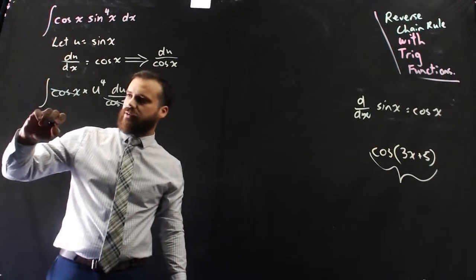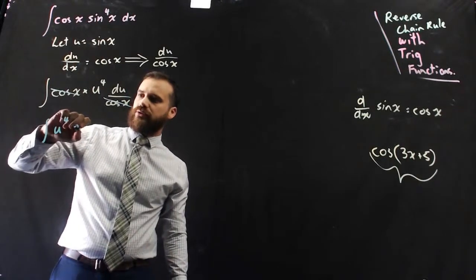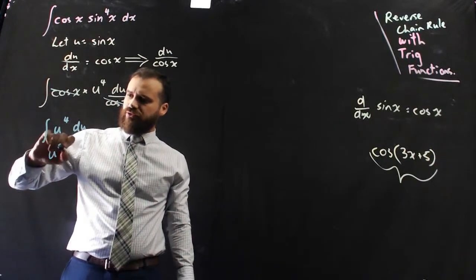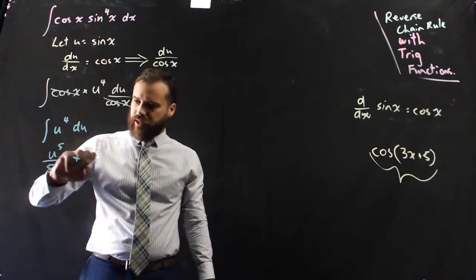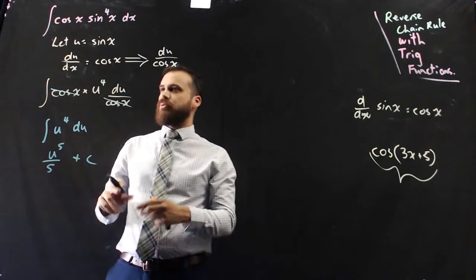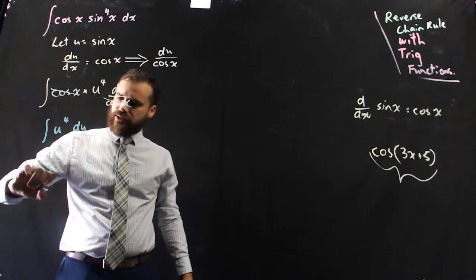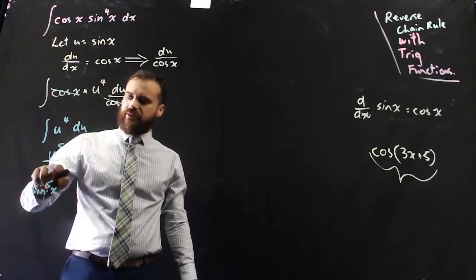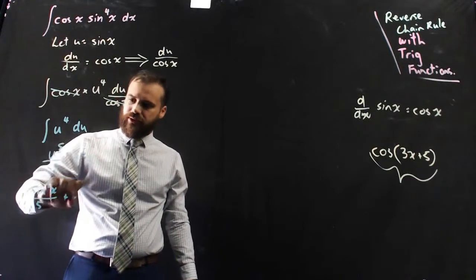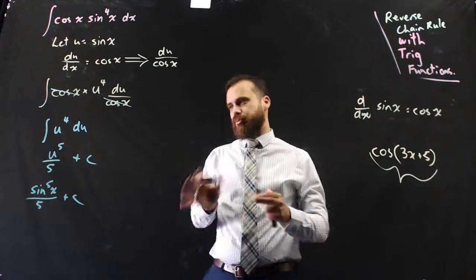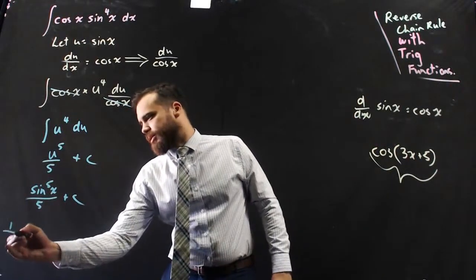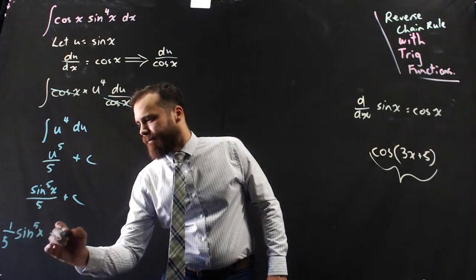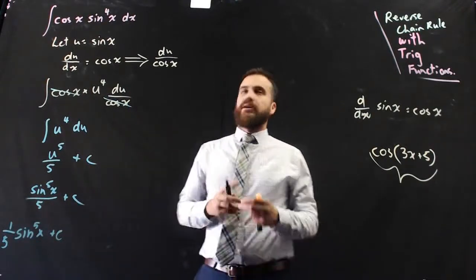And now we have the integral of u^4 with respect to u. Now the integral of u^4 is just u^5 over 5, plus c. And what was u? u was sin x. So now we have sin x, we can put it in brackets and do to the power of 5, but that's a bit weird. sin^5 x over 5 plus c. You can probably just write that if you want. I think your textbook probably prefers this method. 1 fifth sin^5 x plus c. Done.